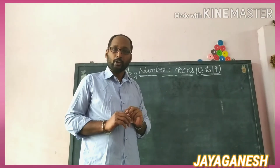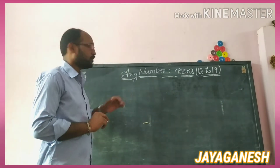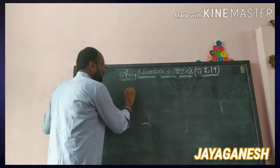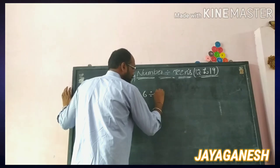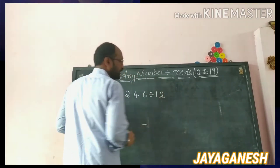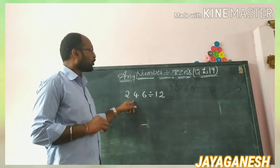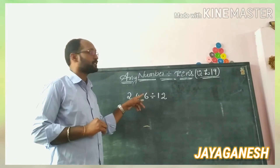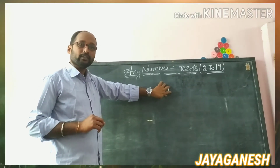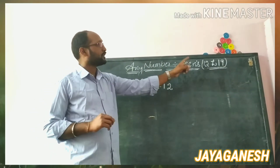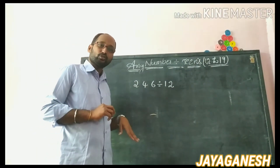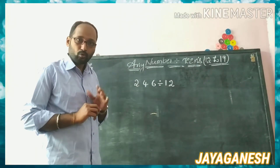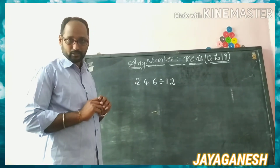Are you ready to learn, children? Let's take one example: 246 divided by 13. Suppose 246 divided by 15, or 246 divided by 19 — whatever divisor is there, the divisor should be from 12 to 19 only, not more than 19 or less than 12. Now I am going to explain how to do this process.